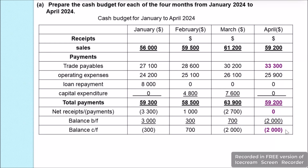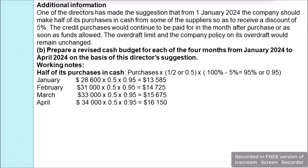We have additional information: one of the directors suggested that from 1st January 2024, the company should make half of its purchases in cash from some suppliers to receive a 5% discount. Credit purchases would continue to be paid in the month after purchase, or as soon as funds allowed. The overdraft limit and bank policy would remain unchanged. We are asked to prepare a revised cash budget for January to April 2024 based on this suggestion.